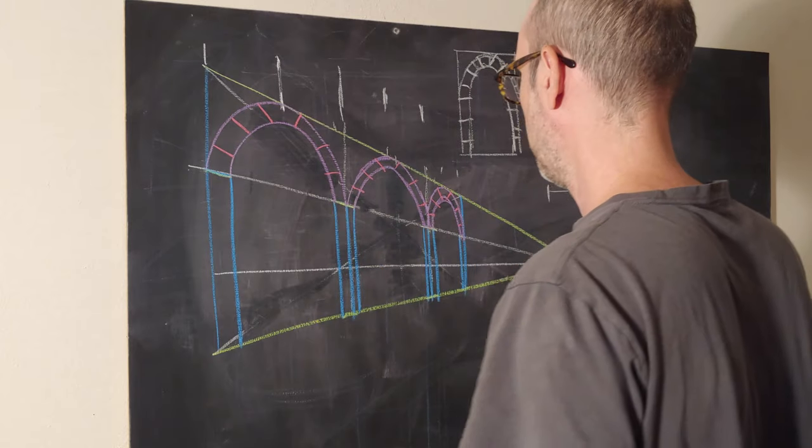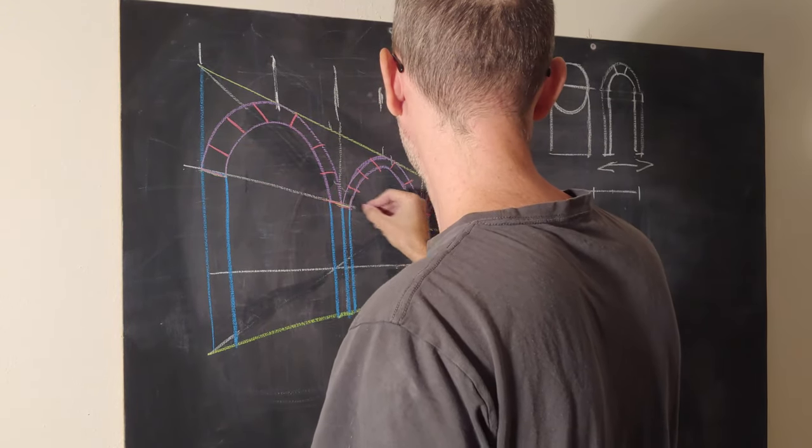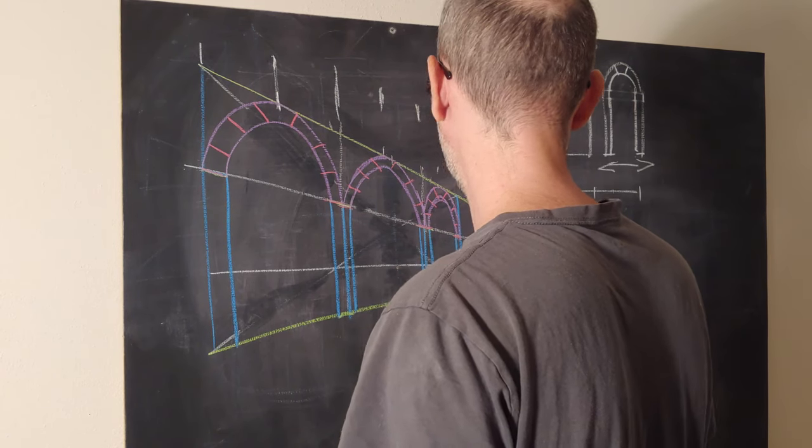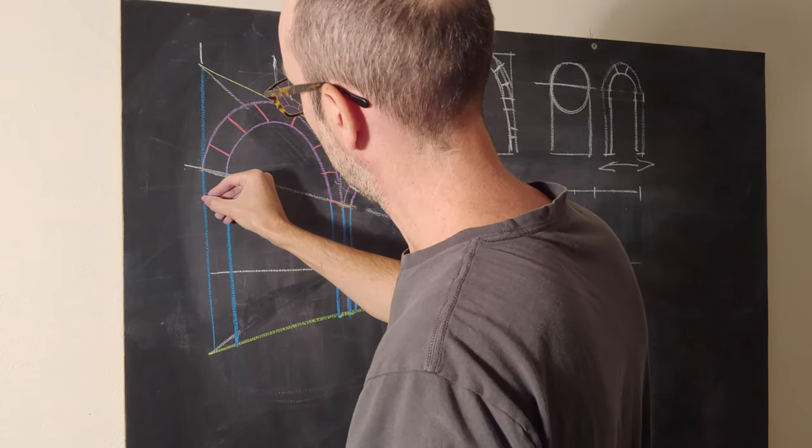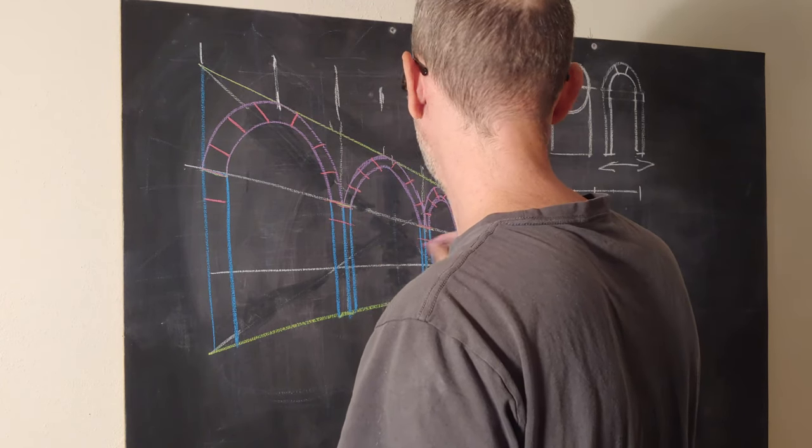And then now our subdivisions, they have to go in perspective. We have to go subdivide, subdivide, subdivide, subdivide, going in perspective. Then we go subdivide, subdivide, subdivide, subdivide in perspective.